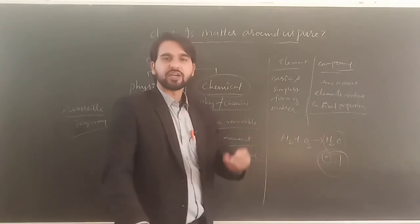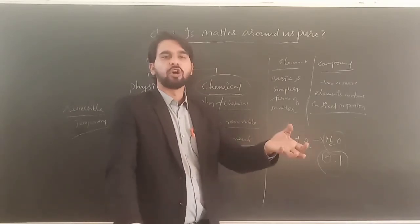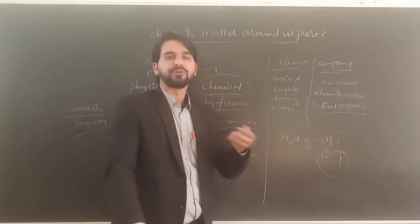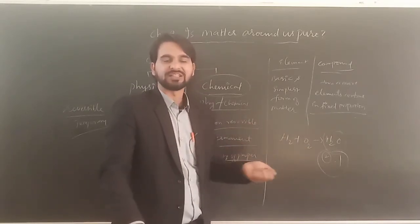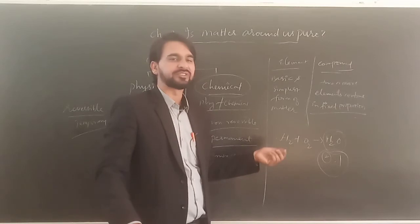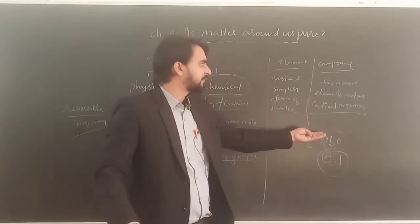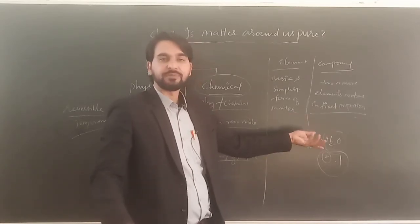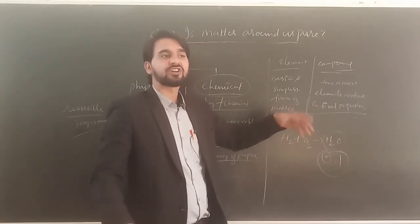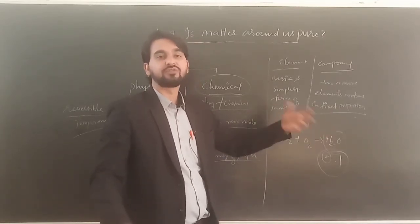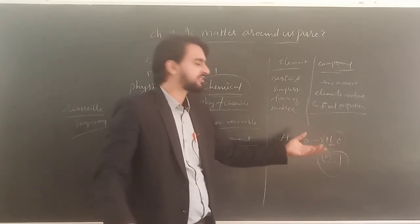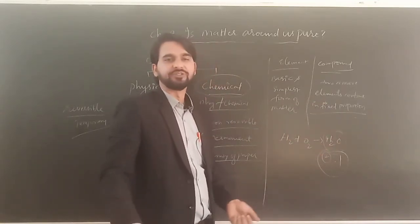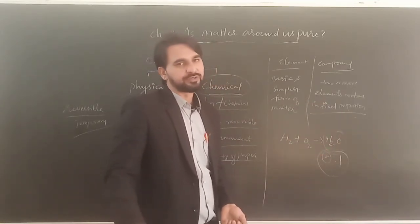For example, elements include gold, copper, silver — the purest forms of metals. If it is a compound, it is a combination of two or more elements, so it comes under the category of compounds.